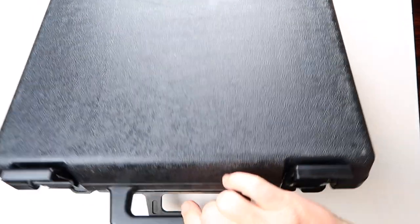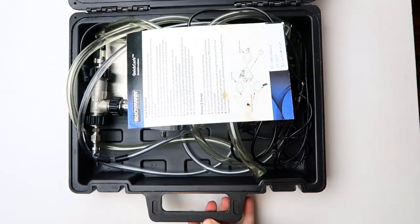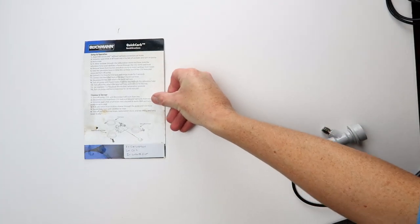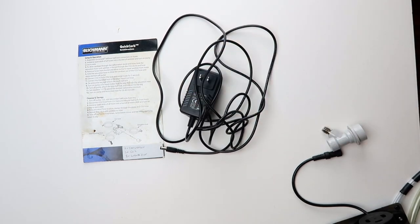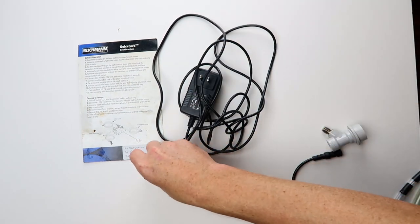Now when you open the box, there's a jumble of all sorts of stuff in there. You've got a whole bunch of hoses, you've got a pump with a power supply, you've got some ball lock connectors and a set of instructions.